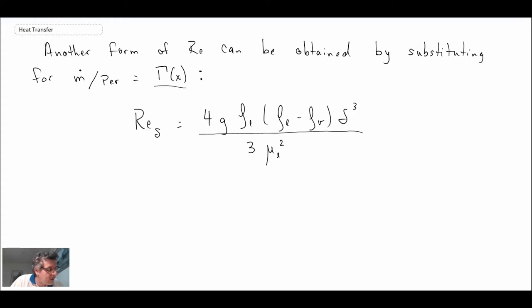We're going to assume that the density of the liquid is much larger than the density of the vapor, which is usually the case. When you look at water, typically for atmospheric pressure, it's a difference of about a thousand. It's a fair assumption to say that the liquid density is much higher than the vapor.